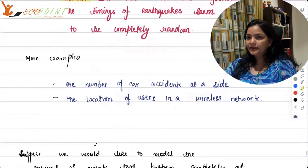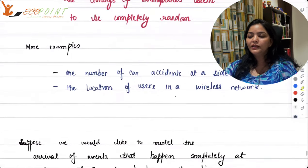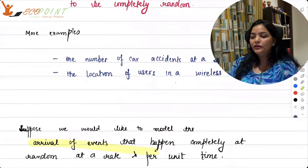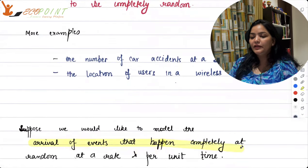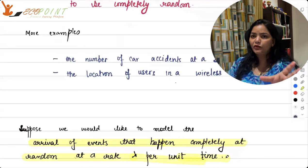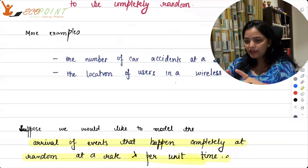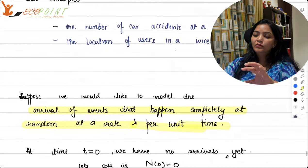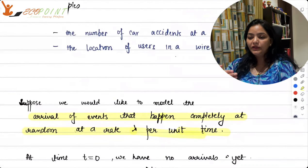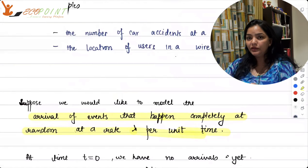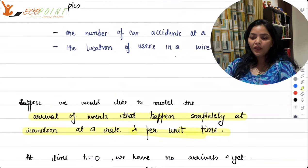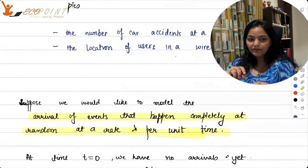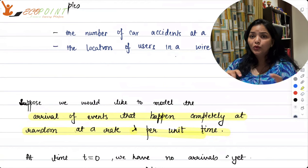Now we take a case to understand this process. Suppose we would like to model arrival of events that happen completely at random at a rate lambda per unit time. So basically when you are talking poison processes, you are associating this with events with time. So if I take t zero, that is just the initial time zero, there is no occurrence at all.